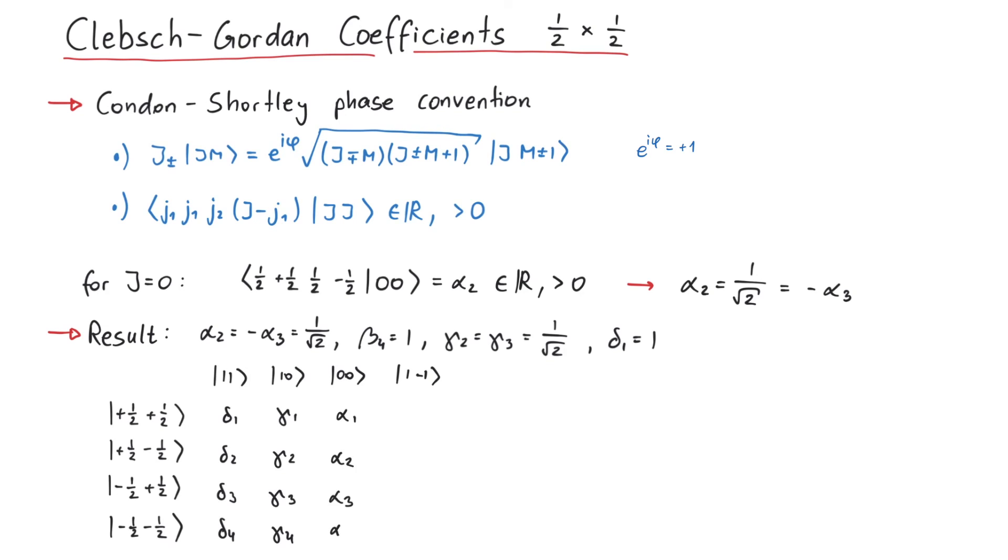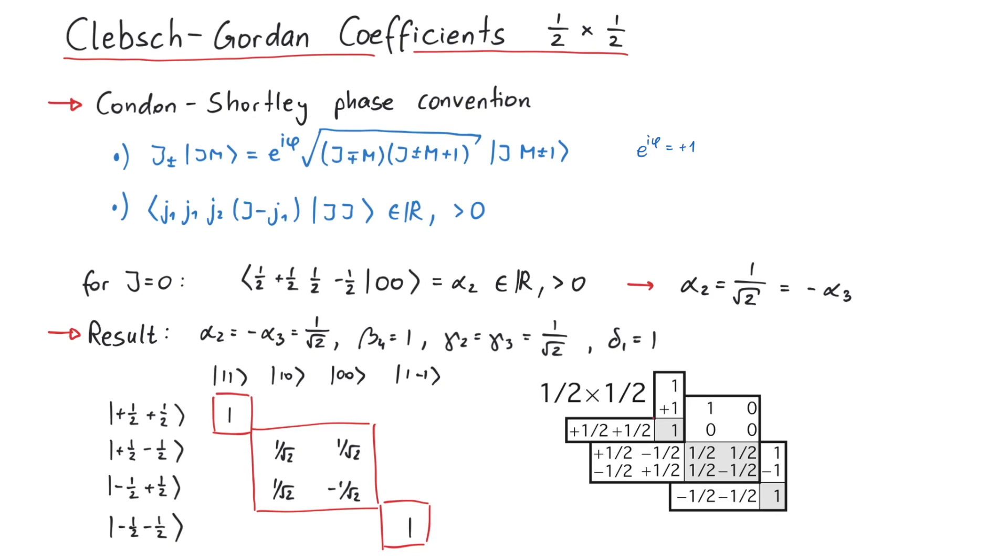Usually, those numbers are written in a table like this, where we have the product basis on the left, and the coupled basis on top. And most of the time, elements where the Clebsch-Gordan coefficient is zero are simply left out of the table, such that it takes on a strange, non-square shape. But that's pretty much it for this video. Thanks for watching.